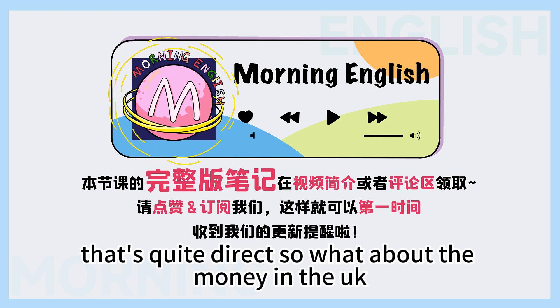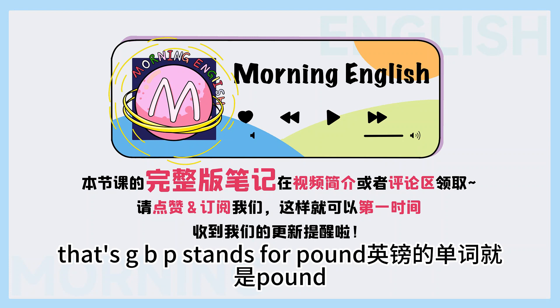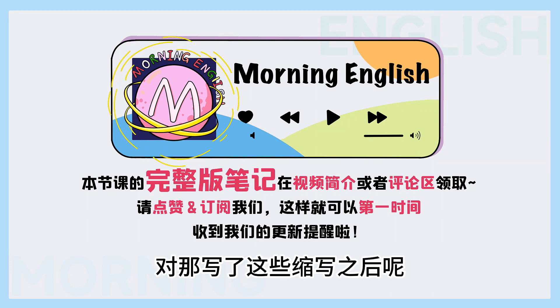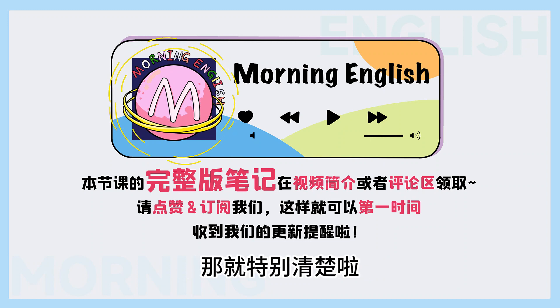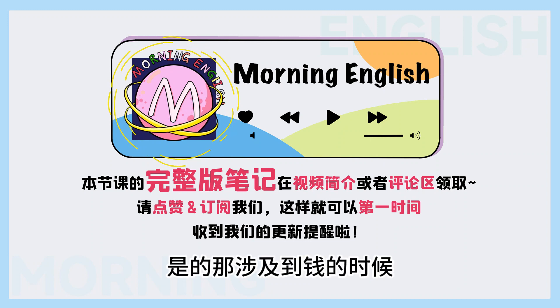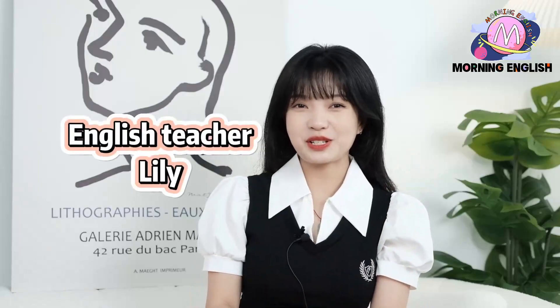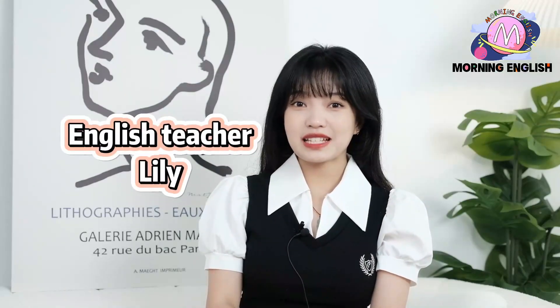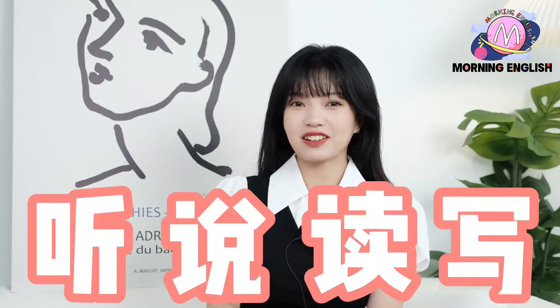So what about the money in the UK? That's GBP. P stands for pound. 英鎊的單詞就是pound. 對，寫了這些縮寫之後，以後再去查匯率兌換就特別清楚了。